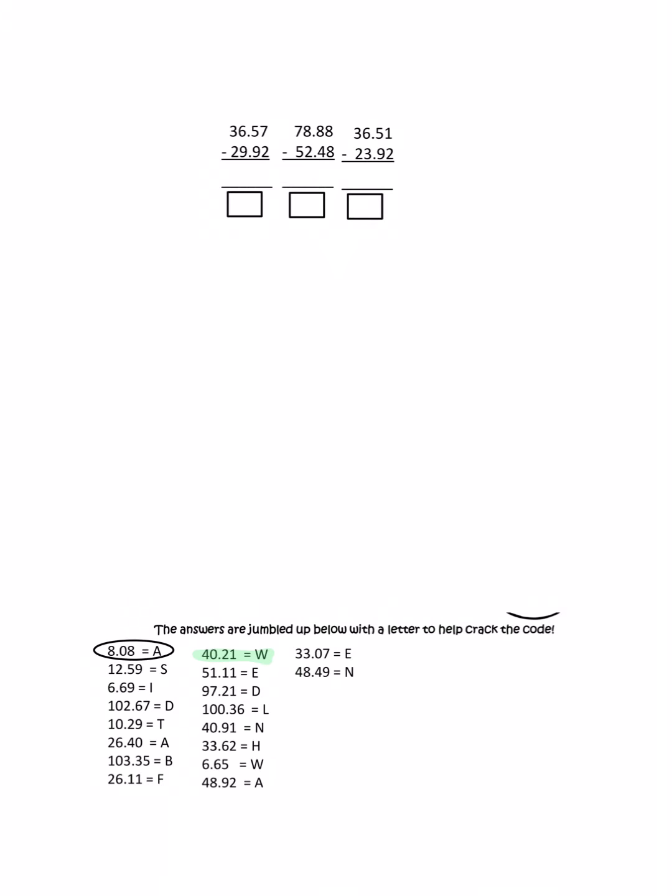Okay, so here we're told to subtract 36.57 minus 29.92. Make sure that your numbers are stacked up by place value. Then begin subtracting.